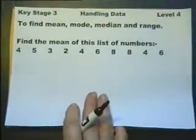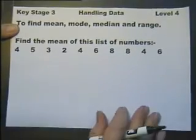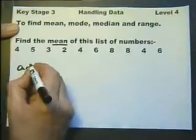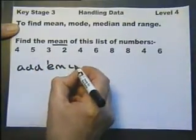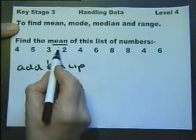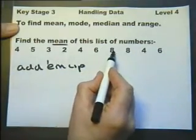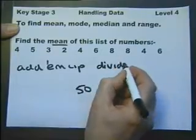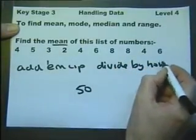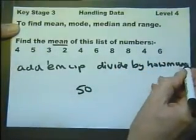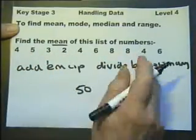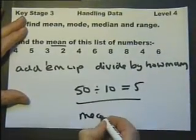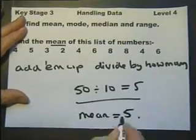To find the mean, mode and median and range. The mean is add up the list of numbers. So we do that, that's 9, 12, 13, 14, 24, 32, 40, 50. And then divide by how many? 1, 2, 3, 4, 5, 6, 7, 8, 9, 10. And that calculates the mean. The mean is add them up and divide by how many.